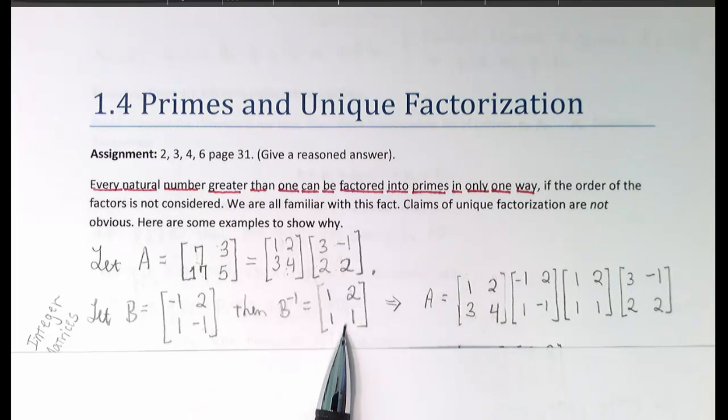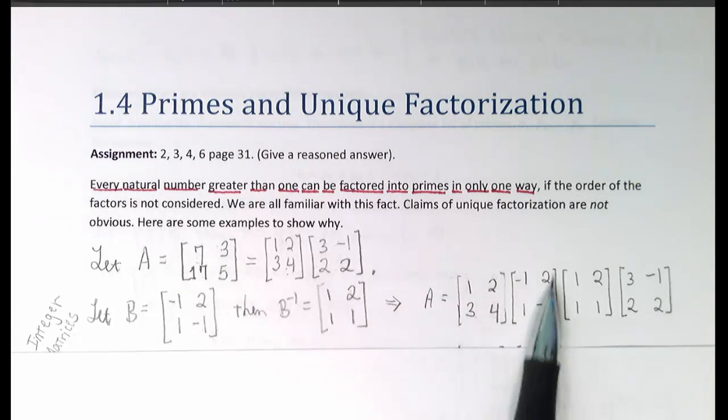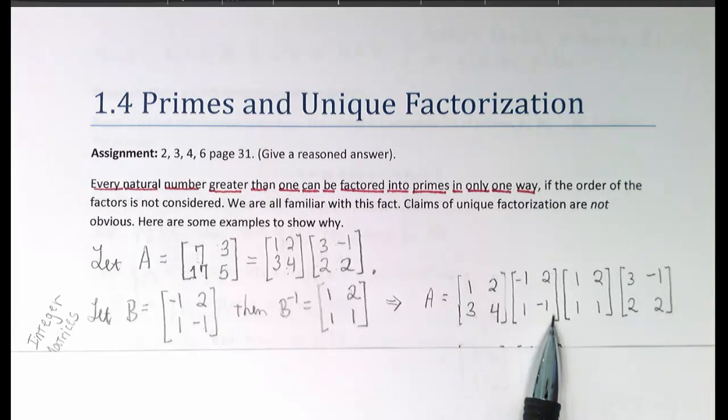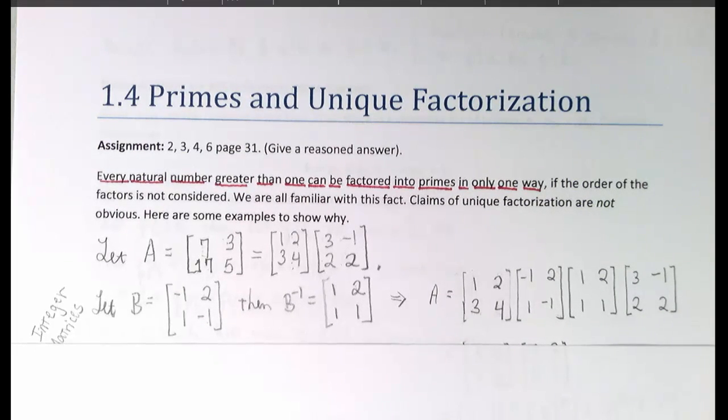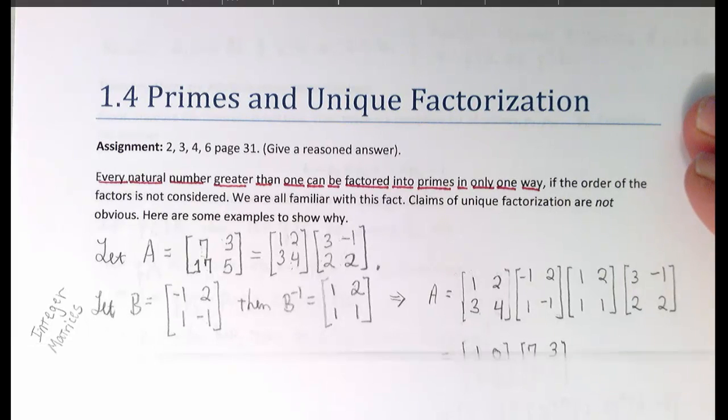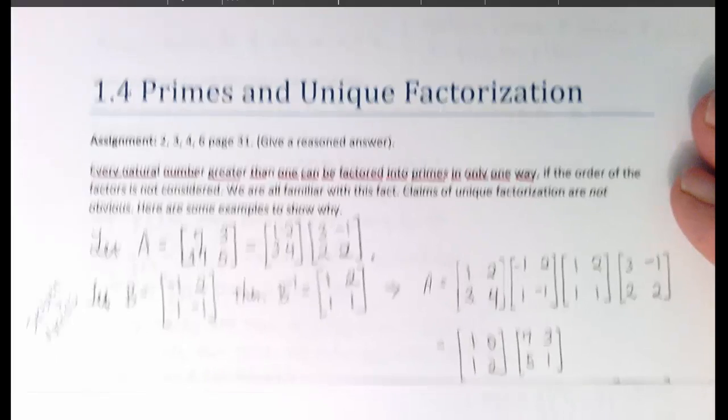then its inverse, in this case, also happens to contain only integers 1, 2, 1, 1 for its rows. Then if I insert B times B inverse into my earlier product for A, I have another factorization for A. And what I could do would be to associate the first two matrices out of these four and the second two out of these four, multiply them together and get another way of factoring this matrix into two matrices.